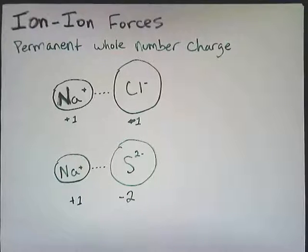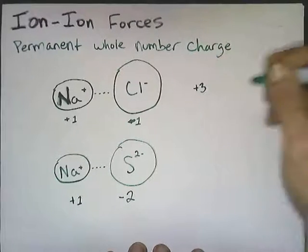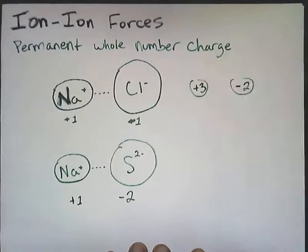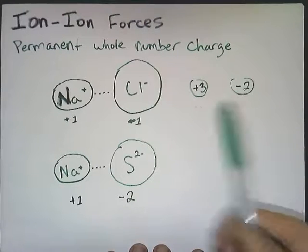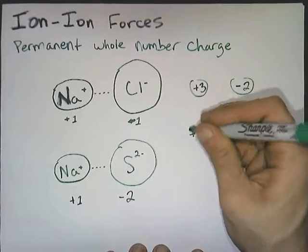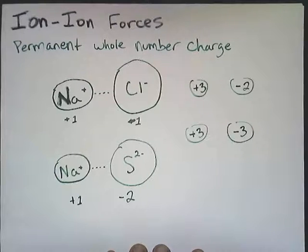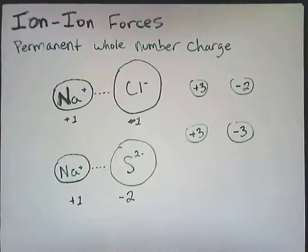And so this works for bigger and bigger ions. If we looked at something with a charge of plus three, hanging out with something with a charge of minus two, well, this would be an even stronger interaction. And even stronger than this would be an ion with a plus three charge hanging out with an ion with a minus three charge. So the bigger the charges are, the larger the attraction between them will be.